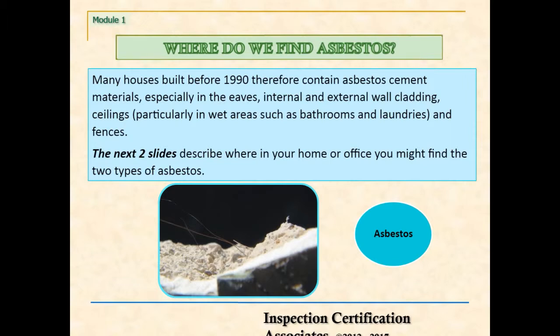Many houses built before 1990 contain asbestos cement materials, especially in the eaves, internal and external wall cladding, ceilings — particularly in wet areas such as bathrooms and laundries — and fences. The next two slides describe where in your home or office you might find the two types of asbestos.